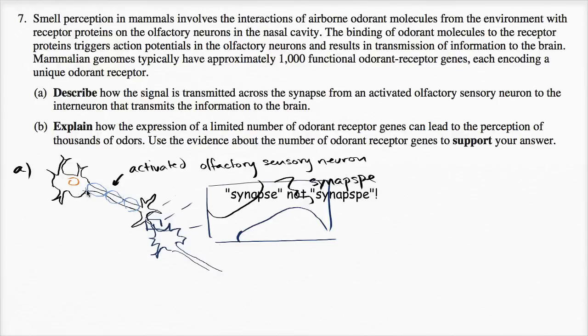And the activated olfactory sensory neuron, you have this action potential that is going to go down the axon, and then when it gets to the axon terminal right over here, it will trigger the release of neurotransmitters. So these neurotransmitters are typically hanging out in these vessels right over here. But then when the action potential comes, they will get released into the synaptic cleft.